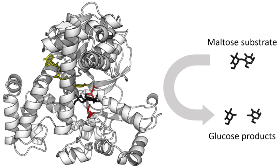Michaelis-Menten kinetics relies on the law of mass action, which is derived from the assumptions of free diffusion and thermodynamically driven random collision. Many biochemical or cellular processes deviate significantly from these conditions because of macromolecular crowding and constrained molecular movement. More recent, complex extensions of the model attempt to correct for these effects.